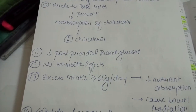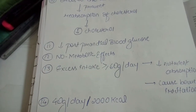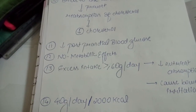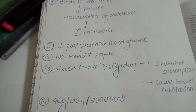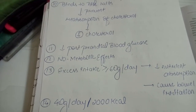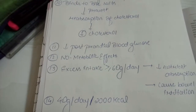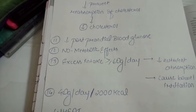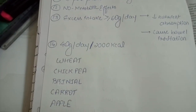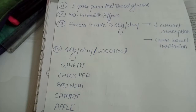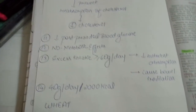Excess intake of more than 60 grams per day can decrease nutrient absorption and cause bloating and irritation. The recommended quantity is 40 grams per day per 2000 kilocalories, though this may differ according to the type of food consumed. Foods with the highest quantity of dietary fiber include wheat, chickpea, brinjal, carrot, and apple.